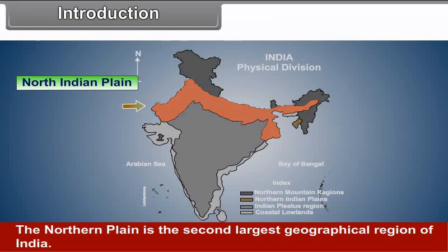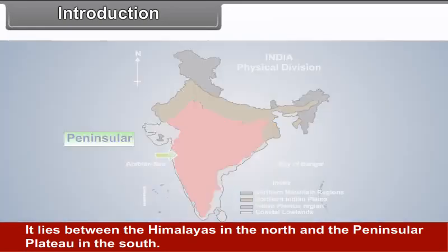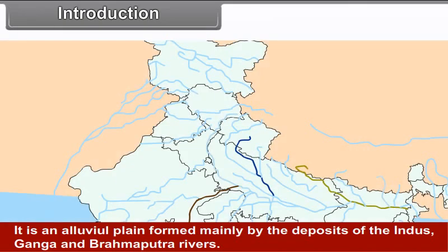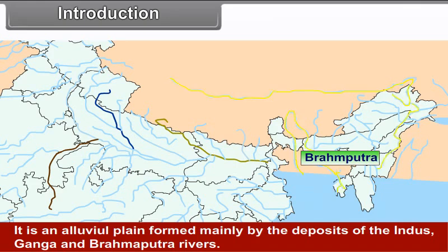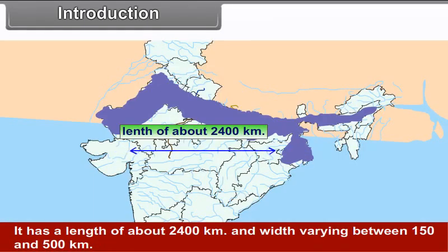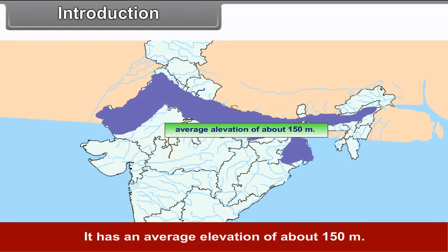Introduction. The Northern Plain is the second largest geographical region of India. It lies between the Himalayas in the north and the Peninsular Plateau in the south. It has an area of 6,77,638 square kilometers. It is an alluvial plain formed mainly by the deposits of the Indus, Ganga and Brahmaputra rivers. The plains stretch from Rajasthan Plain in the west to the Assam Valley in the east. It has a length of about 2,400 kilometers and width varying between 150 and 500 kilometers, with an average elevation of about 150 meters.